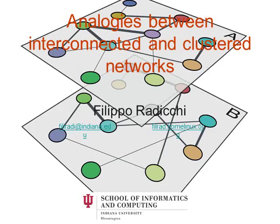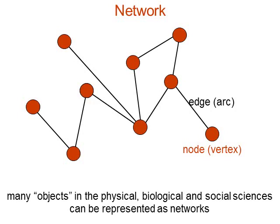The talk today will be related to the previous one. What do we mean by a network? A network is something very general. You have a set of units we typically call nodes or vertices, and these units interact in pairs. The connections between them represent some kind of interaction — we call them edges. This kind of description is very general, so many systems in nature can be described using this approach.